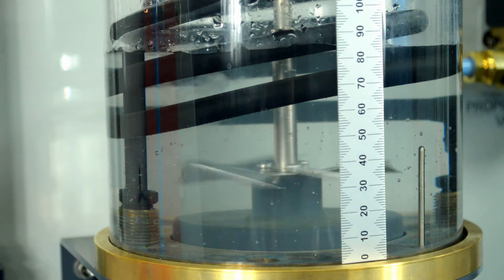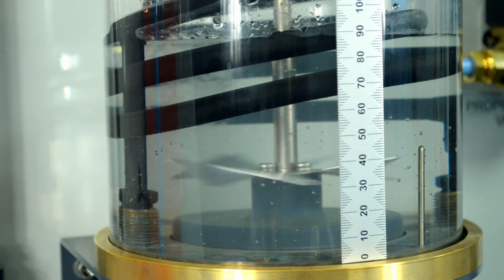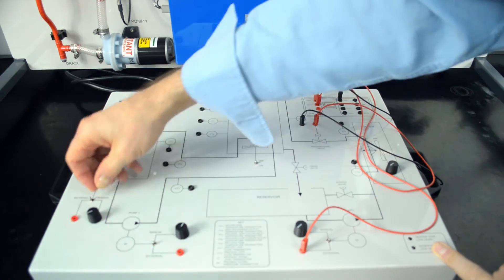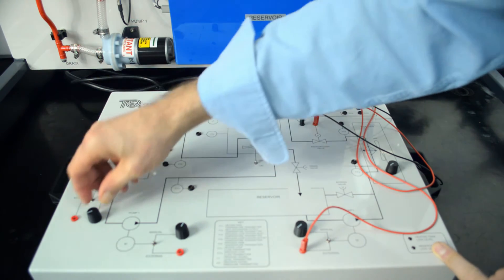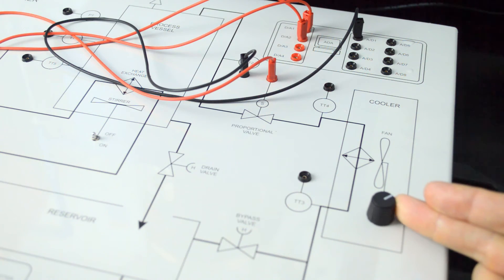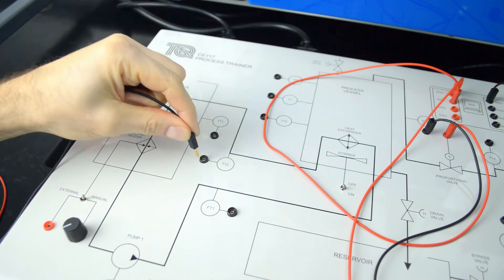The process vessel also includes a stirrer to give an even distribution of hot and cold water. The control module links the experiment module to provide access to the connections of each part on the experiment module.